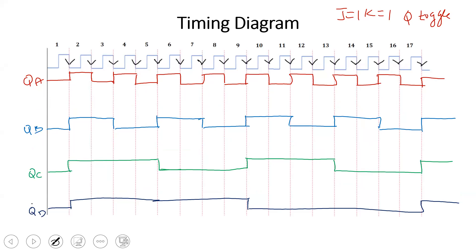Reading the output with QD as MSB and QA as LSB: after the first clock pulse, QA=1, QB=1, QC=1, QD=1, which is 1111 — that is 15. After the second clock pulse the state is 1110 — that is 14. Third clock pulse: 1101 — 13. Fourth clock pulse: 1100 — 12. Fifth clock pulse: 1011 — 11. Sixth clock pulse: 1010 — 10.